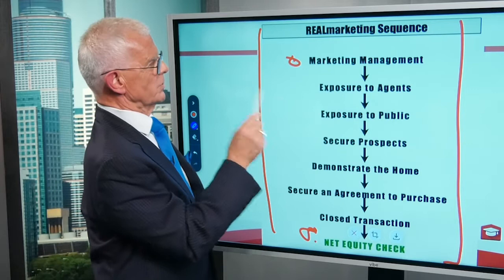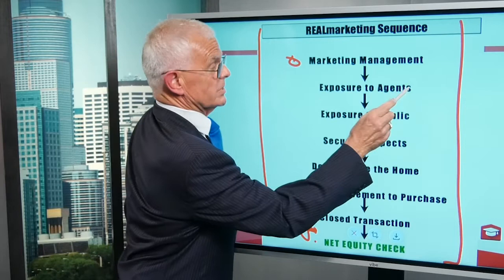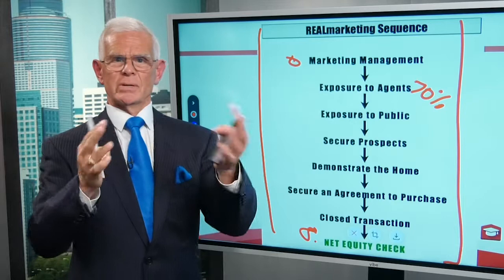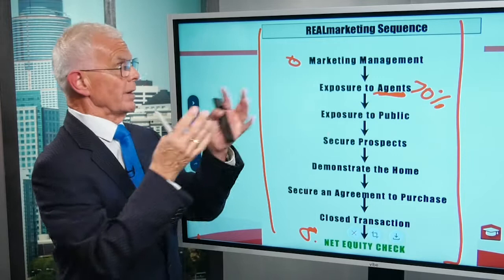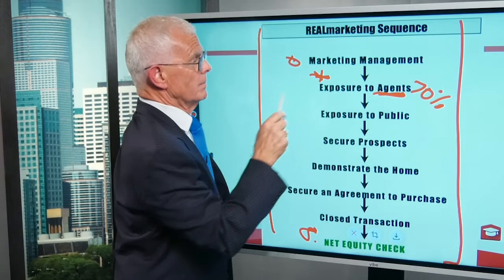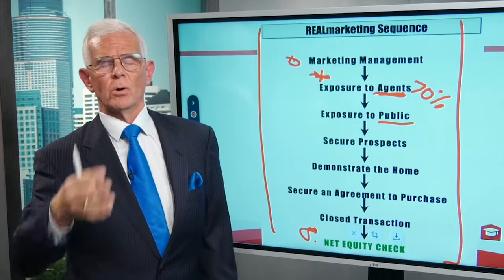Then exposure. A lot of sellers say, 'Well, how are you going to expose it to the public?' In some cases, 70% of the customers are coming from another agent. So you might say, 'Mr. and Mrs. Seller, you're asking me the wrong question. The first thing you should know is how do I co-op with other agents? How do I share the MLS data and photos and broker open houses?' Because this is going to be one of the main ways that we find a buyer. Then you can talk about the public and the websites and open houses and advertising and marketing and everything else you do.